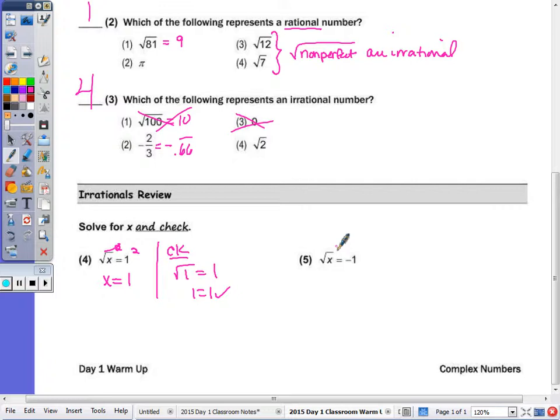Now number five, when I square both sides, I end up with x equal to... Well, negative one squared does mean negative one times negative one, which is also a positive one. But when I check that,